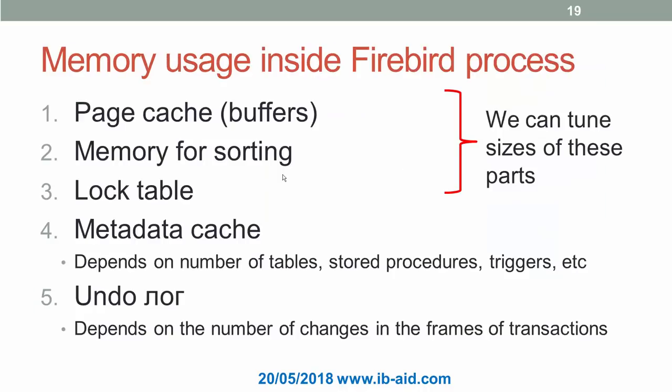As you remember from the first part of our webinar, we found that each Firebird process internally uses memory for several purposes. We can tune memory consumption for three of them: page cache, memory for sorting, and log table. Let's discuss them in detail — what they mean, how to change them, and what the recommended values are.